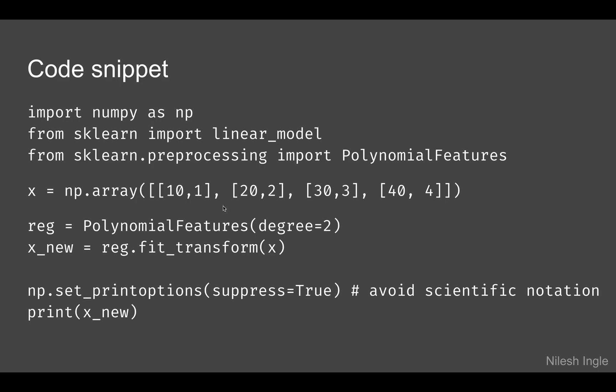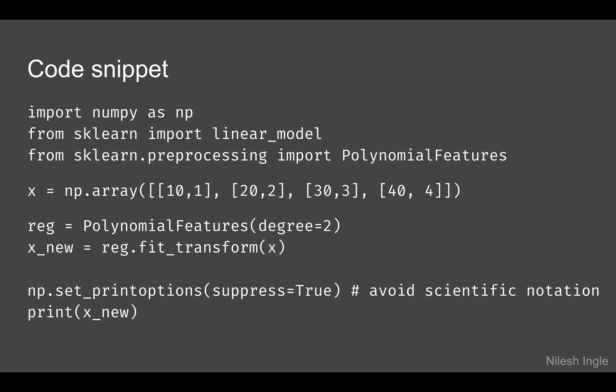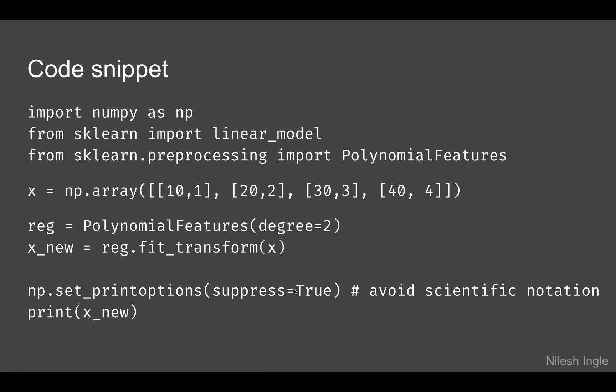Here is the code snippet for polynomial features. There is no x_train or y_train here because I'm just showing how to transform an existing set of features. We have an array of two columns — one column is 10, 20, 30 and the other has 1, 2, 3, 4. Using polynomial features we fit and transform it to get those additional features. This optional line — np.set_print_options with suppress=True — avoids output in scientific notation.